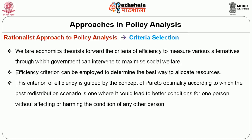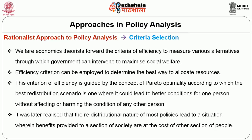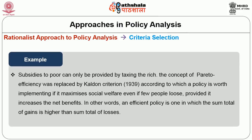Welfare economics theorists forward the criteria of efficiency to measure various alternatives through which government can intervene to maximize social welfare. Efficiency criteria can be employed to determine the best way to allocate resources. This criteria of efficiency is guided by the concept of Pareto optimality, according to which the best redistribution scenario is one where it could lead to better conditions for one person without affecting or harming the condition of any other person. However, it was later realized that the redistributional nature of most policies leads to a situation wherein benefits provided to a section of society are at the cost of other sections. For example, subsidies to the poor can only be provided by taxing the rich. Therefore, the concept of Pareto efficiency was replaced by the Carleton criteria, according to which a policy is worth implementing if it maximizes social welfare even if people lose, provided it increases the net benefits. In other words, an efficient policy is one in which the sum total of gains is higher than the sum total of losses.